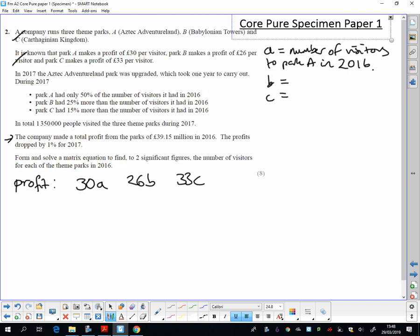All the way down here we've got the profit in 2016, and that's what we defined our letters to be. So if we add those up, they've got to add to 39.15 million. You've got to be careful - you've either got to write that out or write 39.15 times 10 to the 6 in order to get the right values. So I've used that.